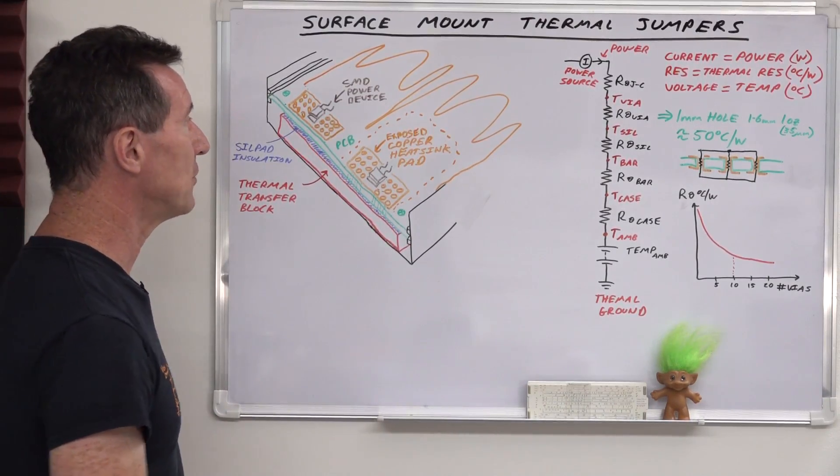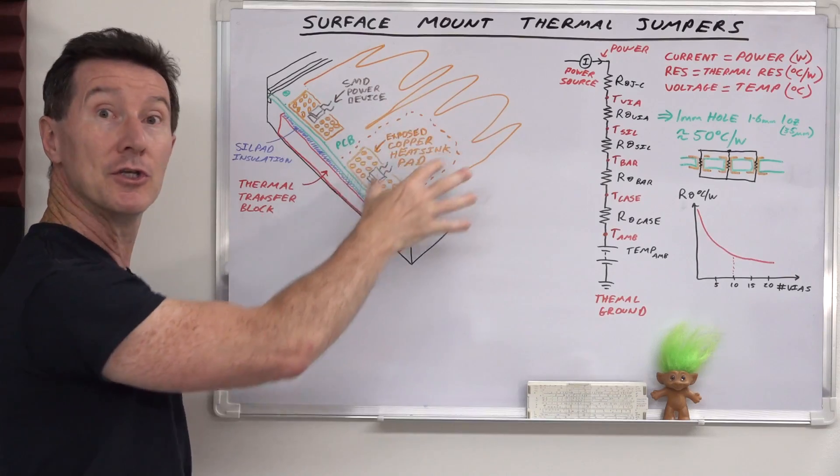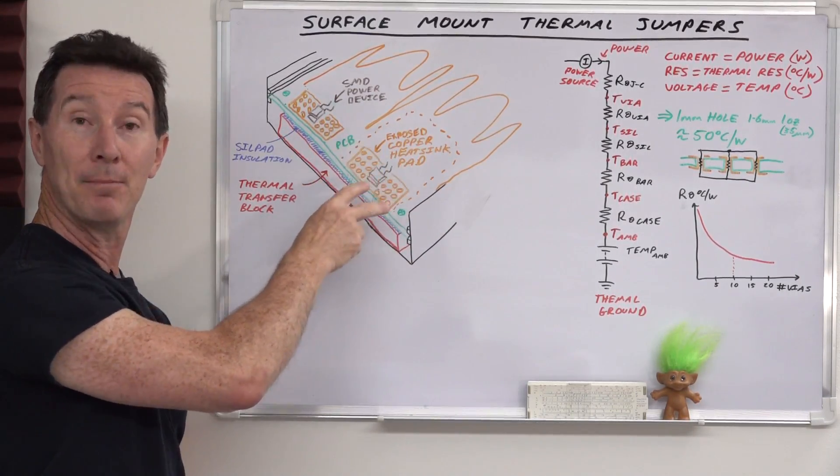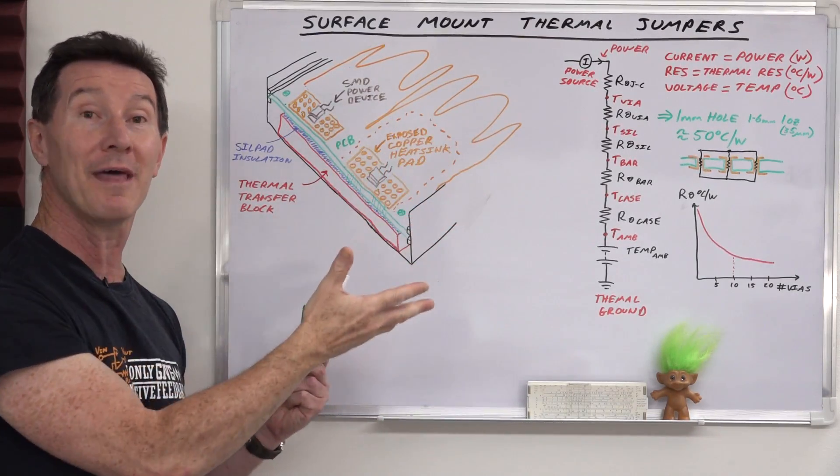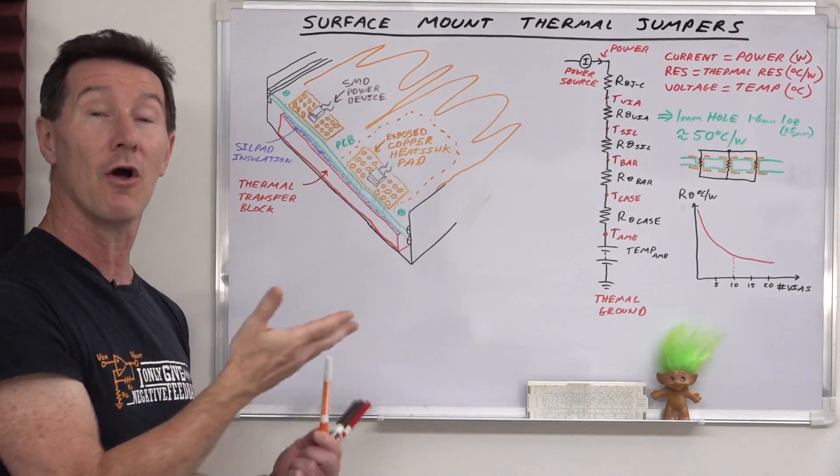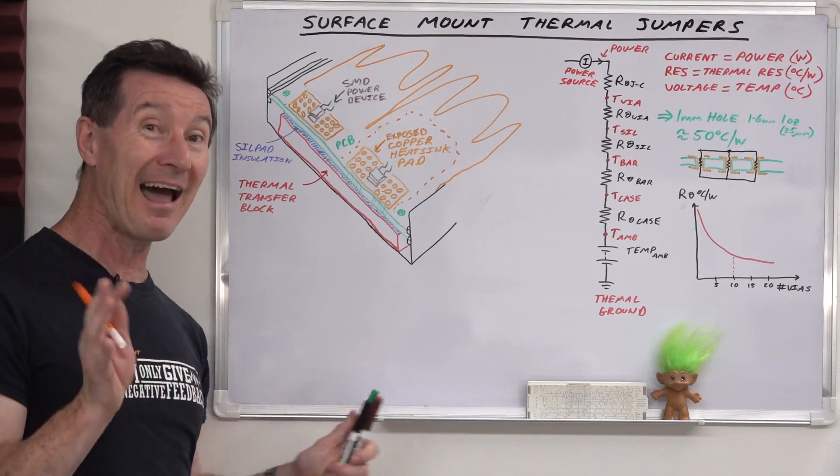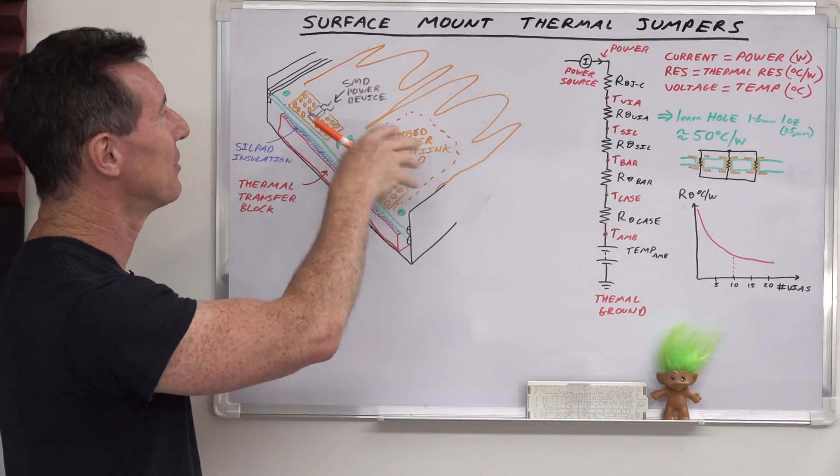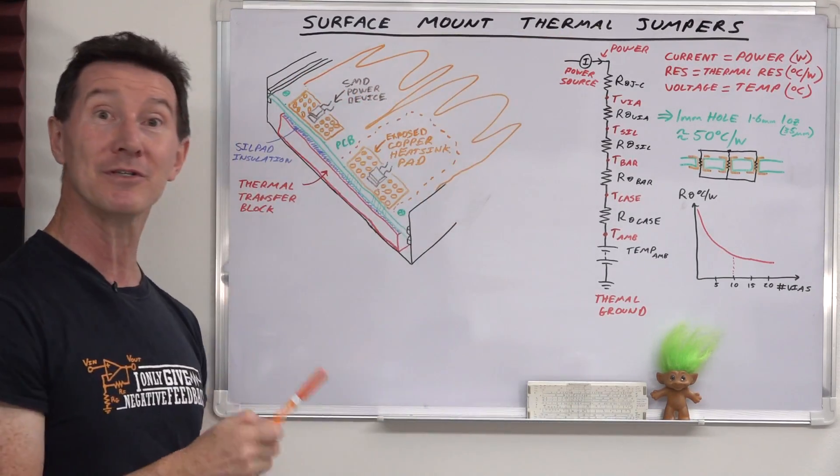So you can't just via stitch to ground. If you're lucky enough to have a device where your thermal tab is either isolated or is grounded, then great, just thermal via stitch down to your ground plane, either internal or external. But where the thermal jumpers come in is if most parts need to be electrically isolated. That's why sill pads exist. That's why you use insulation on the majority of thermal devices, because they can't be electrically connected to ground.